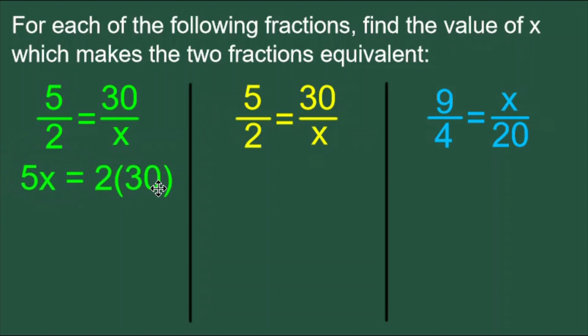So 5 times x, which is 5x, is equal to 2 times 30. We simplify the right side, 5x equals 60, because 2 times 30 is 60.